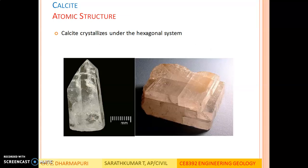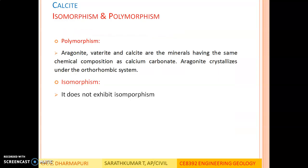Atomic structure: calcite crystallizes under the hexagonal system. Regarding isomorphism and polymorphism: isomorphism does not exist in calcium carbonate. Aragonite, vaterite and calcite are minerals having the same chemical composition — calcium carbonate. Aragonite crystallizes under the orthorhombic system, whereas vaterite and calcite crystallize in the hexagonal system — this is polymorphism. Since their atomic structure is different, they show different characteristics. Isomorphism does not exist in calcite.